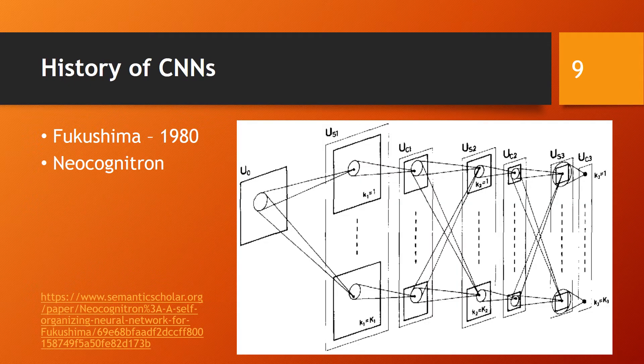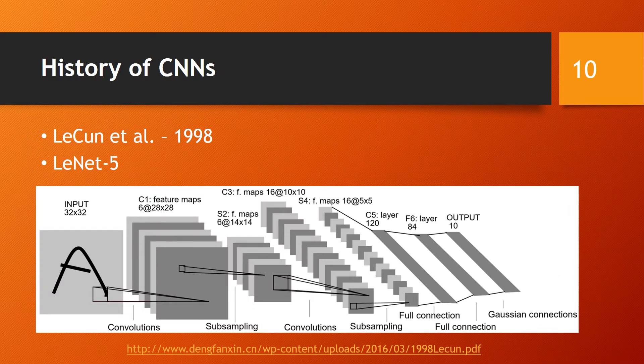Now I will give a brief history of CNNs. One of the first CNNs was Fukushima's Neocognitron in 1980. It was a biologically inspired hierarchical and shift-invariant model for pattern recognition. One of the flaws of this model was that it lacked a supervised training algorithm. In the 1990s, CNNs were frequently used. One of these was LeNet-5, a CNN developed by LeCun et al. to recognize handwritten digits.